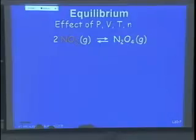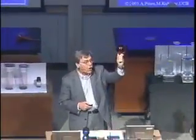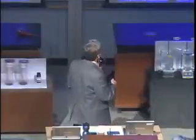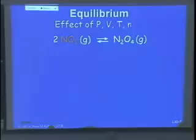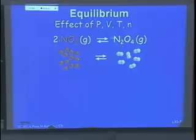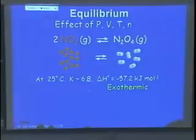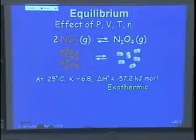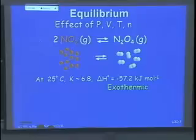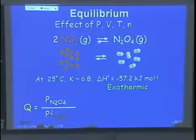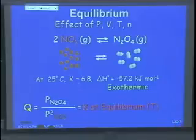So you remember NO2 — hello Beijing, or Los Angeles. NO2 is a colored gas with an orange-brown color. N2O4 is the equilibrium product: two NO2 dimerize to form one N2O4. It's a mixture at equilibrium, and it's still brown. If the equilibrium shifts toward NO2, it becomes darker; if it shifts toward N2O4, it becomes lighter. At 25 degrees, K is 6.8 — larger than one, meaning the equilibrium lies on the right side. This reaction is exothermic, with a negative standard enthalpy. Q equals the partial pressure of N2O4 divided by the partial pressure of NO2 squared. At equilibrium at fixed temperature, this equals K = 6.8.